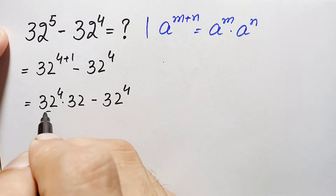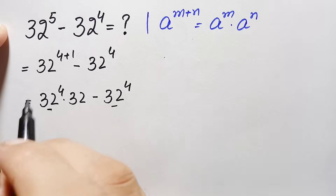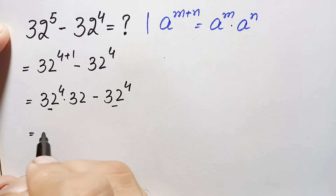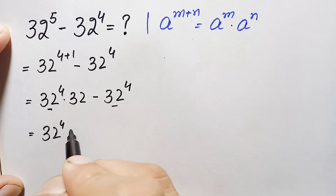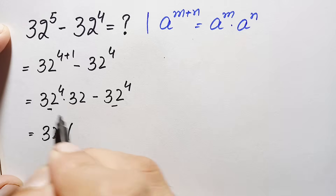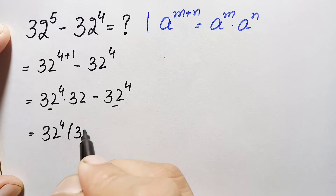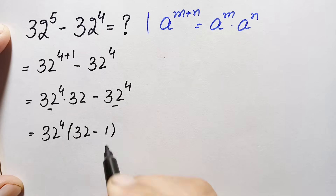Now 32 raised to power 4 is common in both terms, so we take it out. This becomes 32 raised to power 4 times 32 minus 1, which is 32 raised to power 4 times 31.